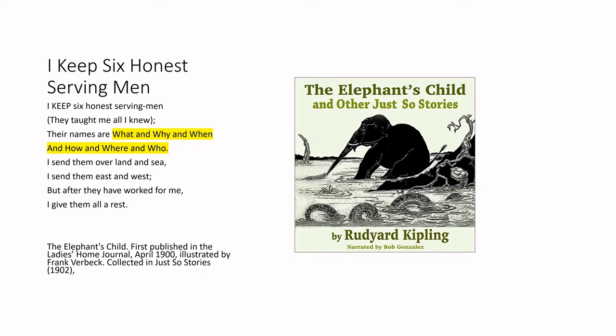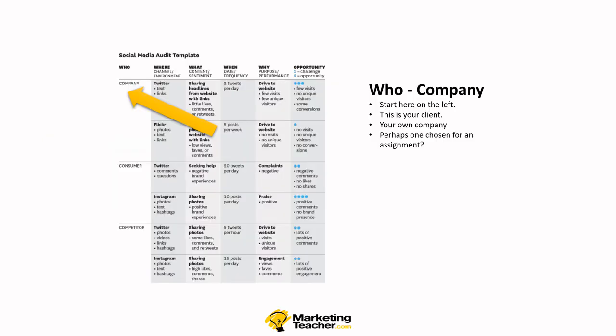If you'd like to know more about the social media audit, please take a look at Keith's book. It's based upon 'The Elephant's Child and Other Just So Stories' by Rudyard Kipling, and the poem: 'I keep six honest serving men, they taught me all I knew. Their names are What and Why and When and How and Where and Who.' It's these words — What, Why, When, How, Where, and Who — that form the basis of the social media audit.